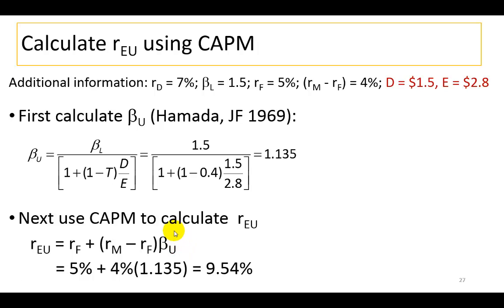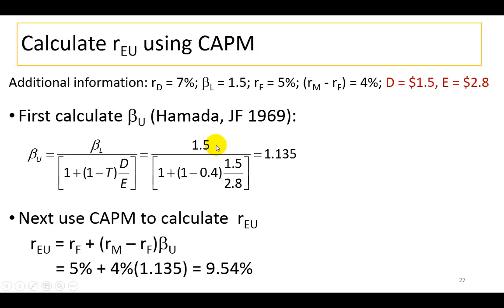With additional data — the firm's debt of $1.5 million and its market capitalization of $2.8 million — we calculate the firm's unlevered beta to be 1.135. Plugging that into the CAPM equation gives us the firm's cost of unlevered equity of 9.54%. In essence, this means that if the firm used no debt, its cost of equity would be 9.54%. To find the corresponding cost of unlevered equity for a different debt level, simply substitute the appropriate value.